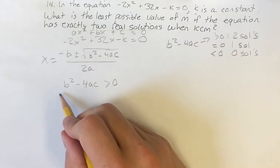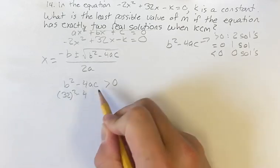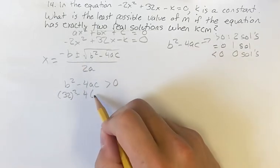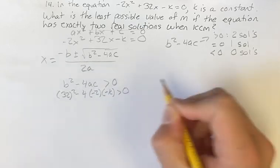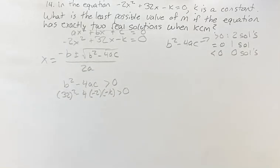So b squared is going to be 32 squared minus 4 times a is negative 2, c is negative k. Now that we have one variable, we can just solve for k.